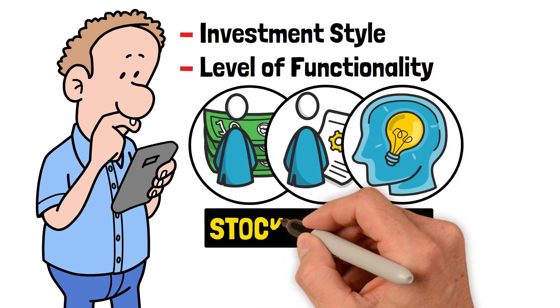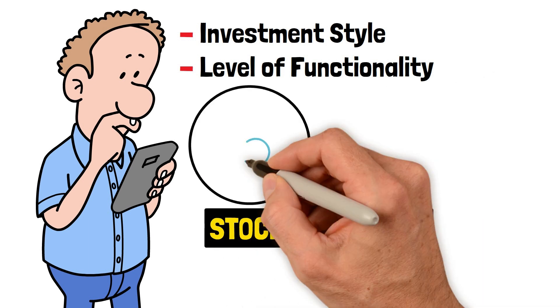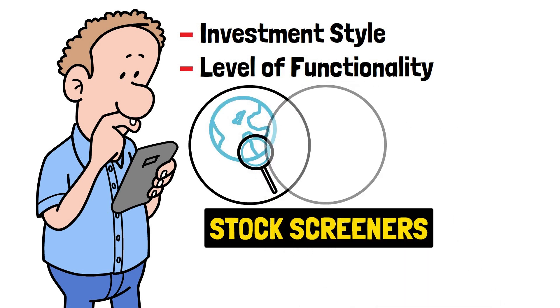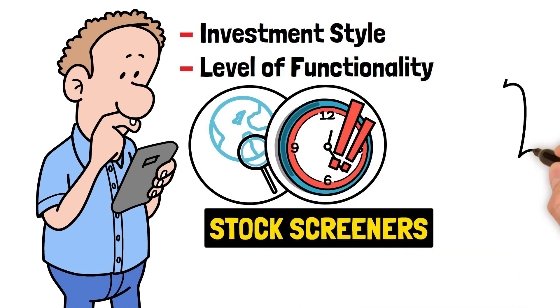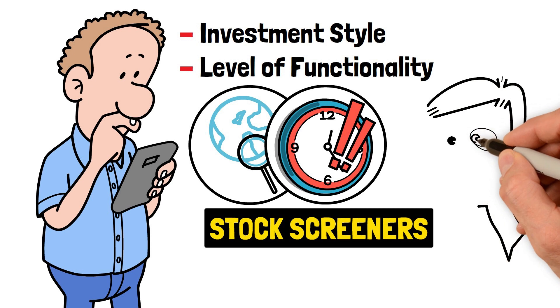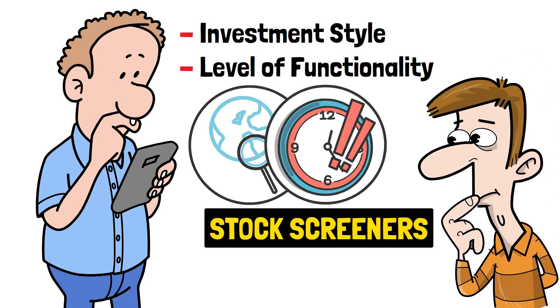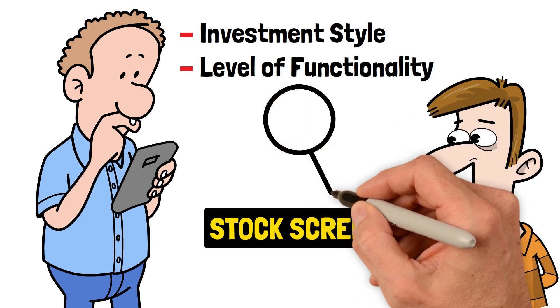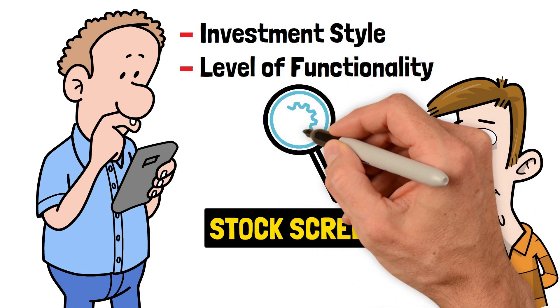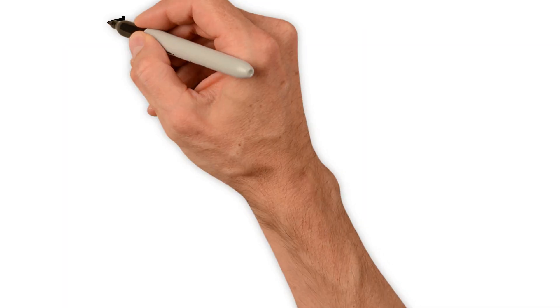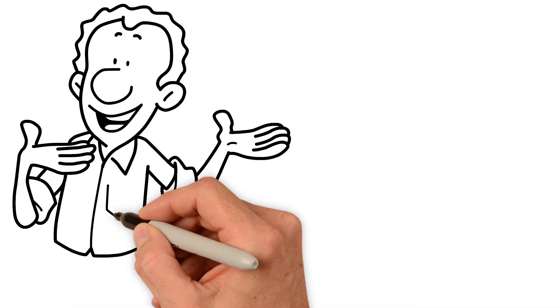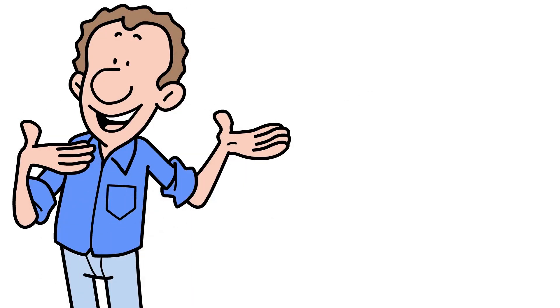Stock screeners are also powerful online tools that help you find companies based on certain criteria, saving you a lot of time searching the internet. Picture yourself sorting through market cap, price to earnings ratio, and dividend yield. Stock screeners offer many filters, allowing you to find your investment chances. As promised earlier, here are the names of a few apps suitable for beginners to begin their trading journey.